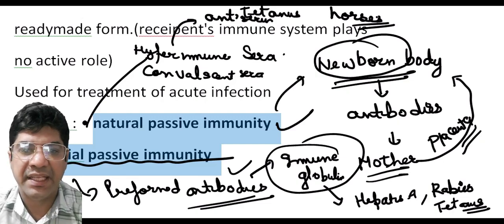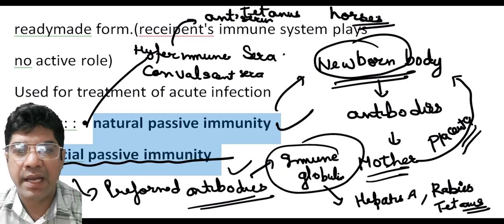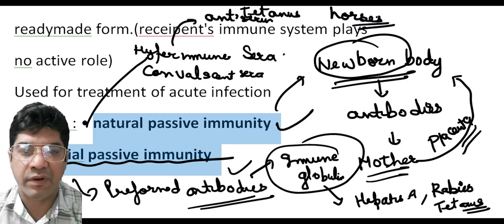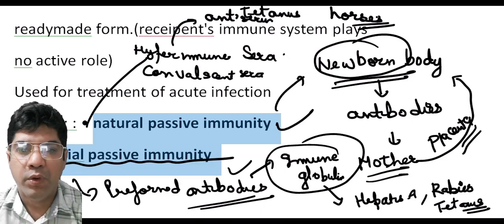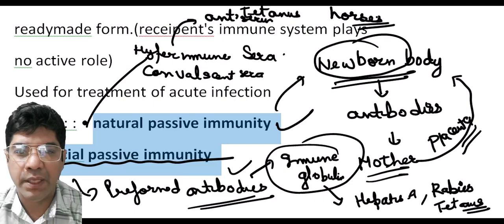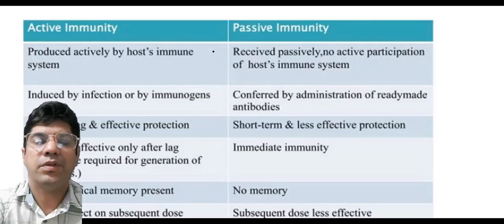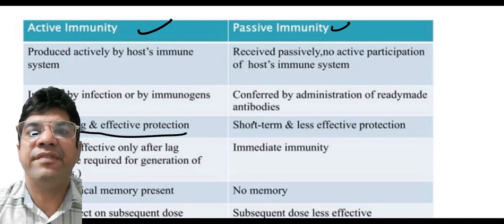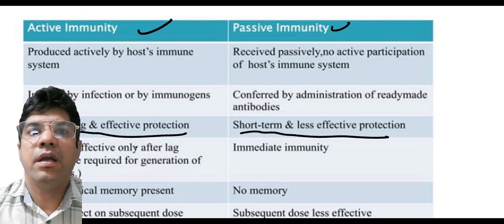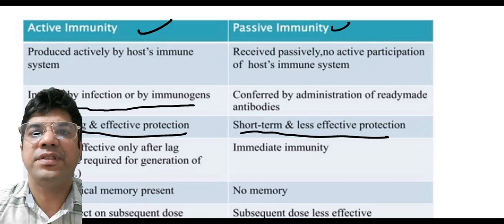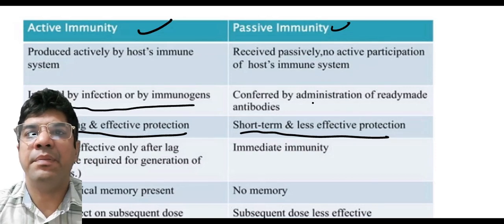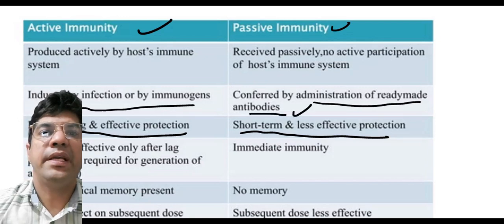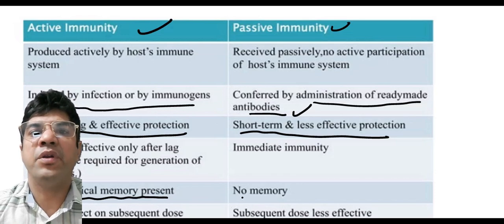Convalescent sera are collected from individuals who have recently recovered from specific infectious diseases — they contain a high level of antibodies against the responsible pathogen, like pooled human gamma globulin. Active immunity is long-lasting whereas passive immunity is short-term. Active immunity is induced by infections or immunogens; passive immunity is conferred by administration of ready-made antibodies. Active immunity has immunological memory present, but in passive immunity, no memory is present.